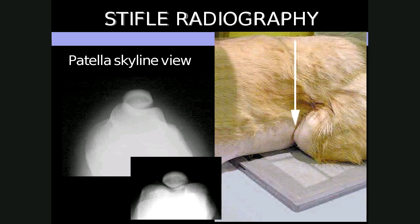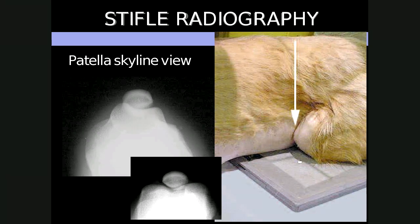Another view we sometimes take of the stifle to look at the patella is the patella skyline view. The correct term is the cranio-proximal to cranio-distal oblique, because the beam remains cranially on the stifle but goes from proximal to distal. It is good for assessing the depth of the trochlear groove as well as the location of the patella in cases of patella luxation, and is especially useful in the equine patient for patella trauma. Here's the patella sitting nicely in the trochlear groove with the trochlear ridges medially and laterally of the distal femur.